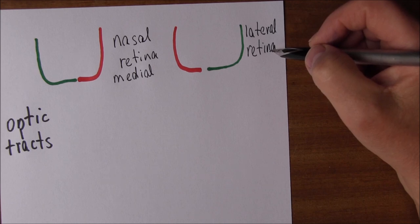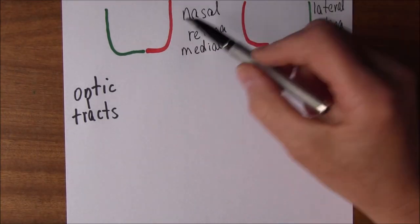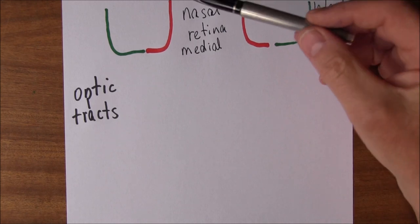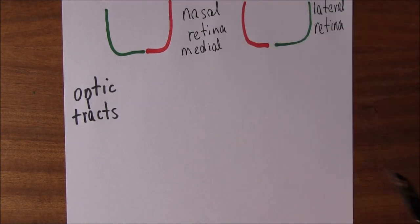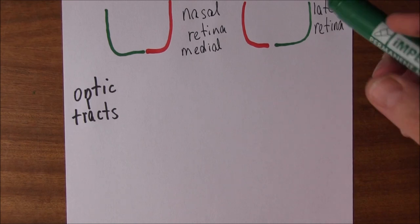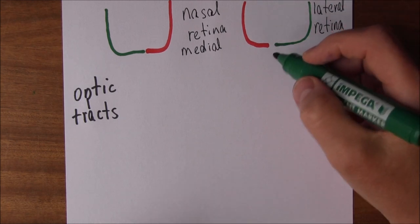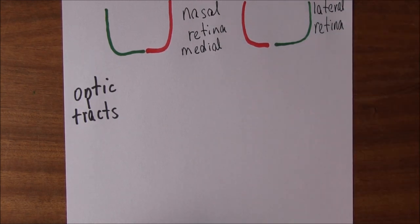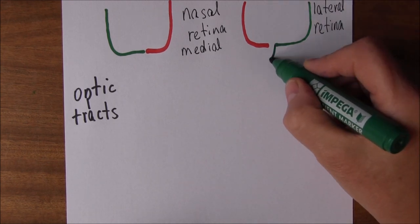Light is going to come in and stimulate the generation of nerve impulses in the retina. Those nerve impulses are then going to travel back in the optic nerves, and they travel back to a central area called the optic chiasm. So this is going to travel back like this from this side.